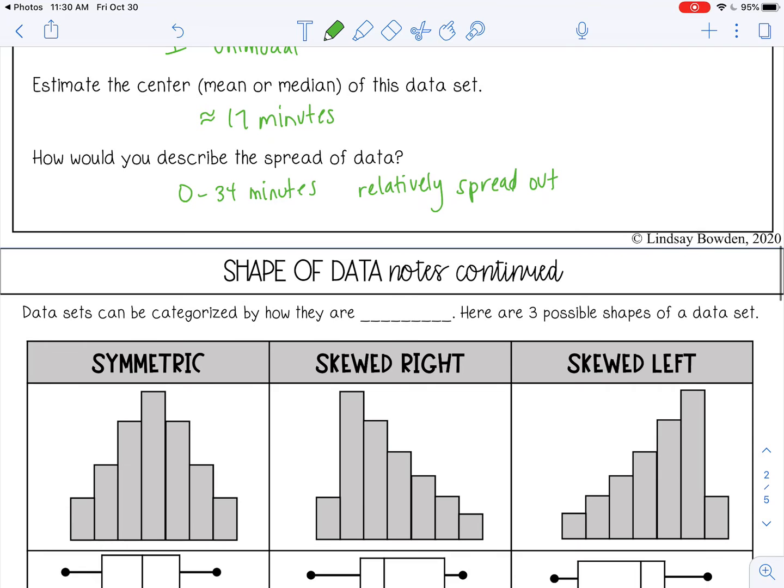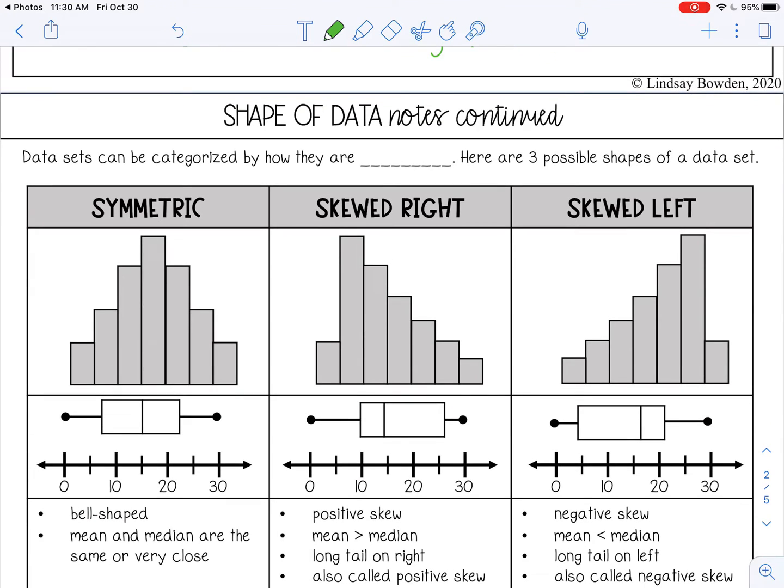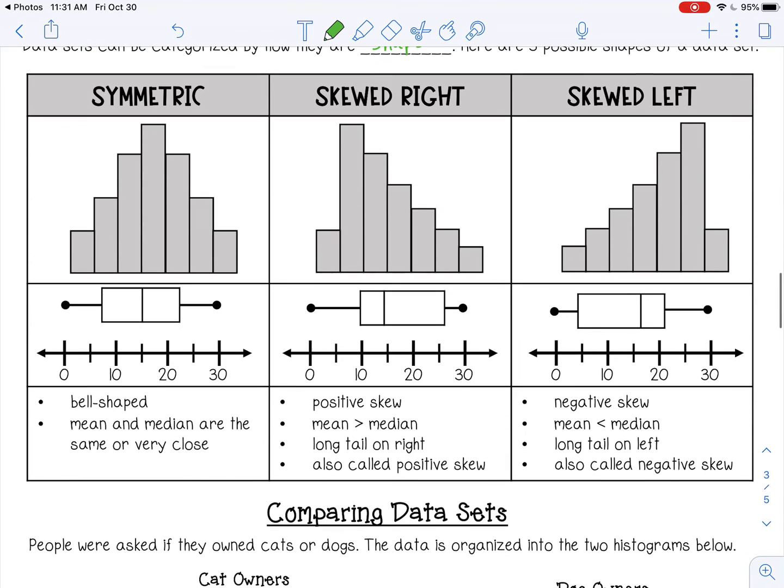Okay, so let's continue to talk about the shape of data. So data sets can be organized by how they are shaped. And there's three possible shapes of a data set. There is symmetric, skewed right, and skewed left.